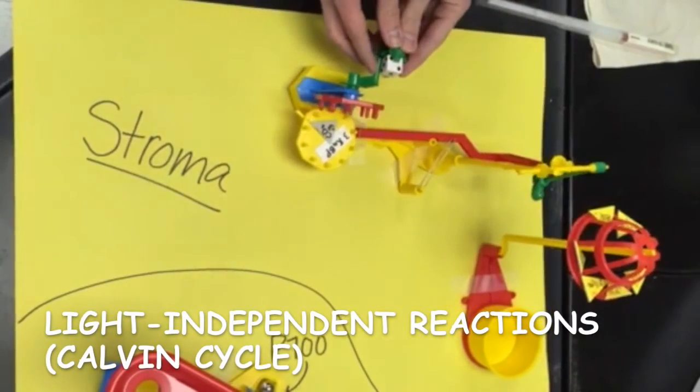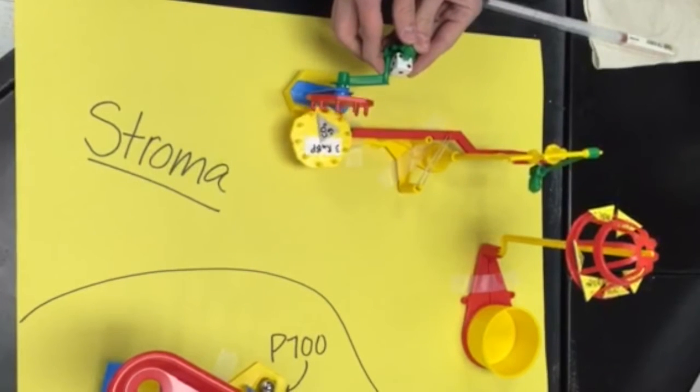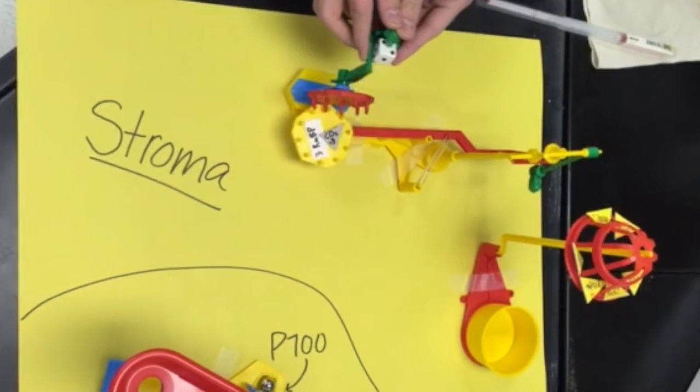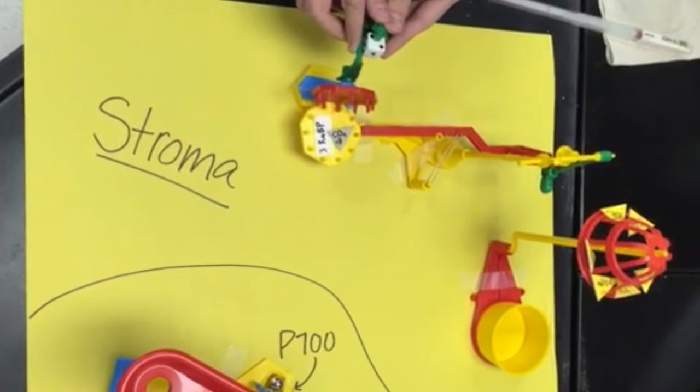The NADPH and ATP produced in the light-dependent reactions facilitate the beginning of the light-independent reactions, also known as the Calvin cycle.